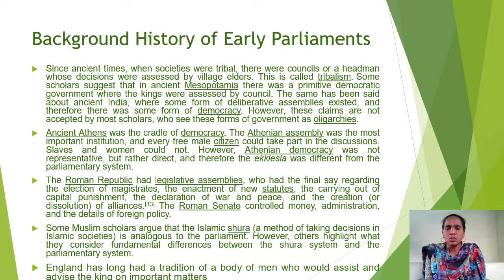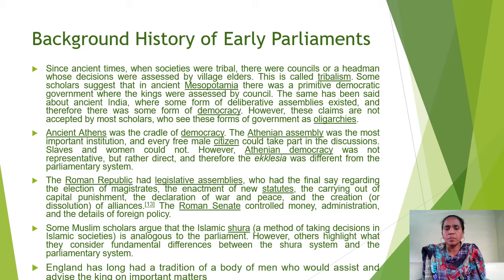Ancient Athens was the cradle of democracy. The Athenian assembly was the most important ancient institution, and every free male could take part in the discussions. Whereas slaves and women could not participate in this democratic process. Athenian democracy was not representative, but rather direct. That is why it is called classical democracy.